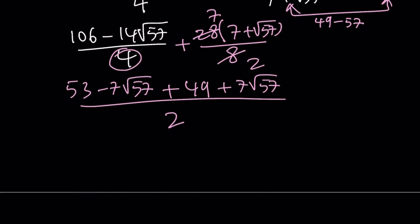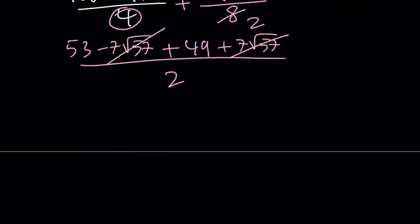Now, notice that these two terms cancel out, which is very important. We want to get a nice answer. 53 plus 49 is 102, and if you divide it by 2, you're going to get 51 from there.